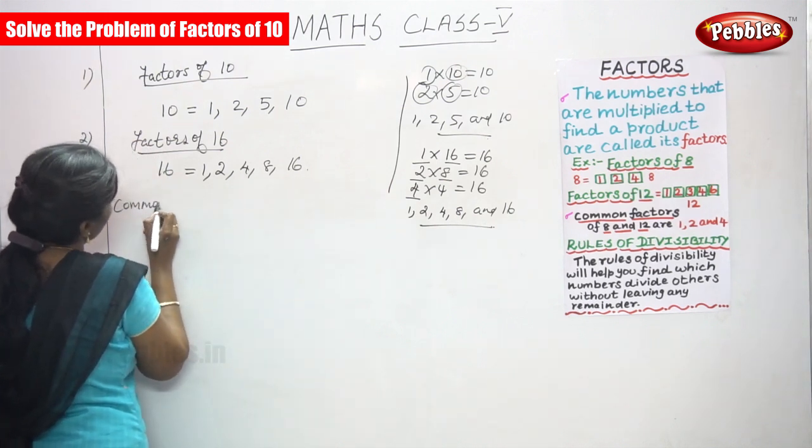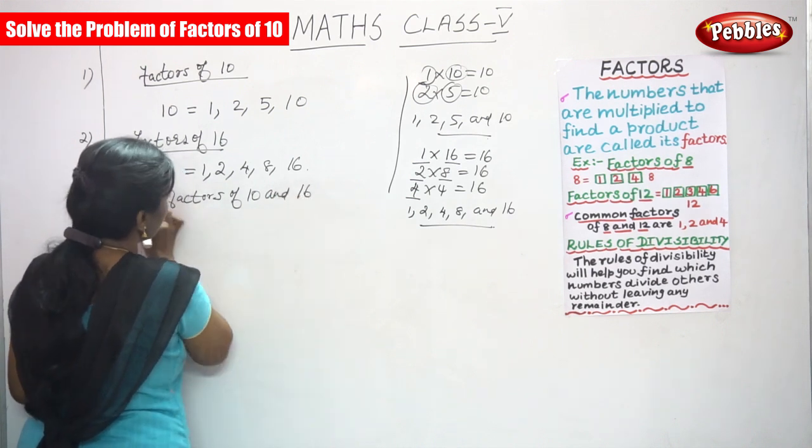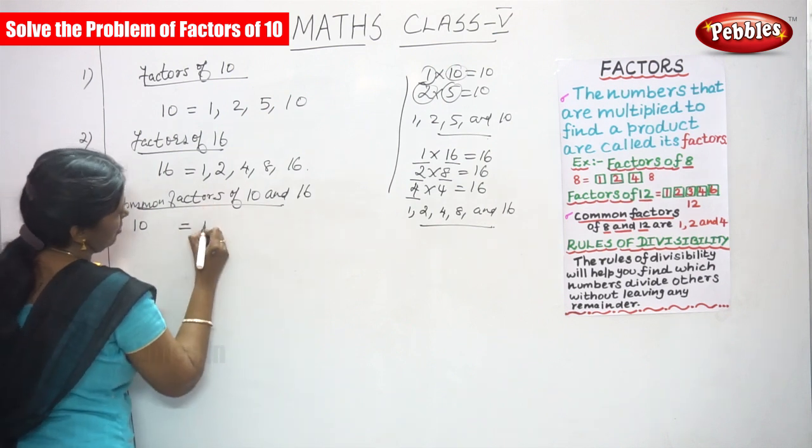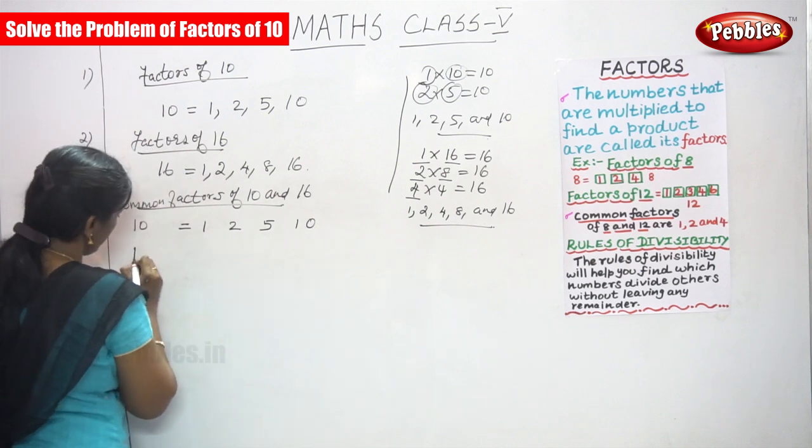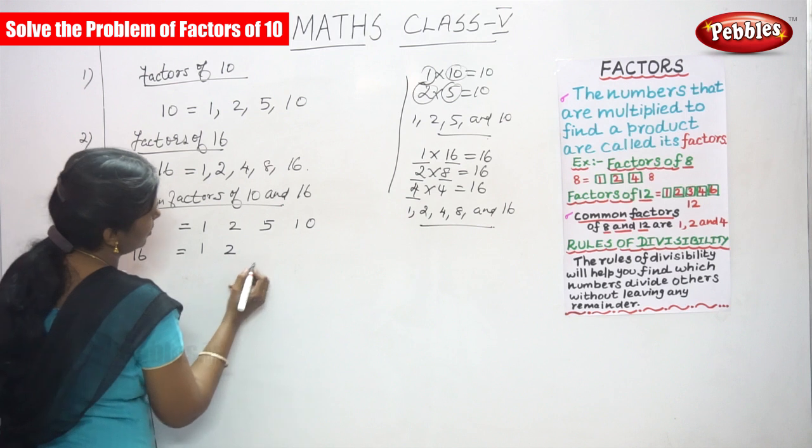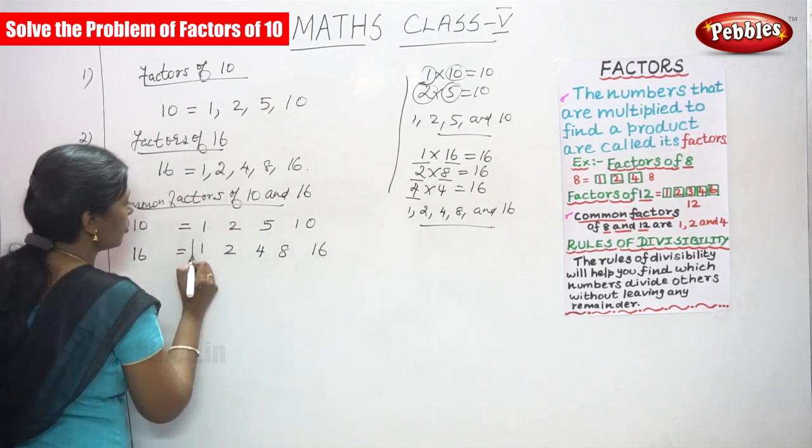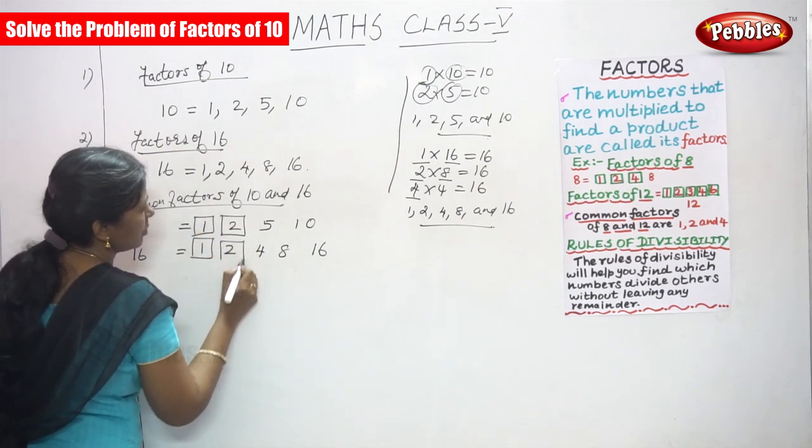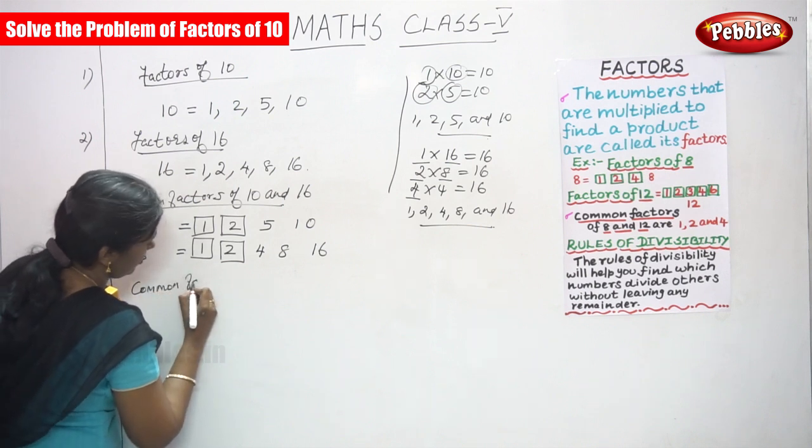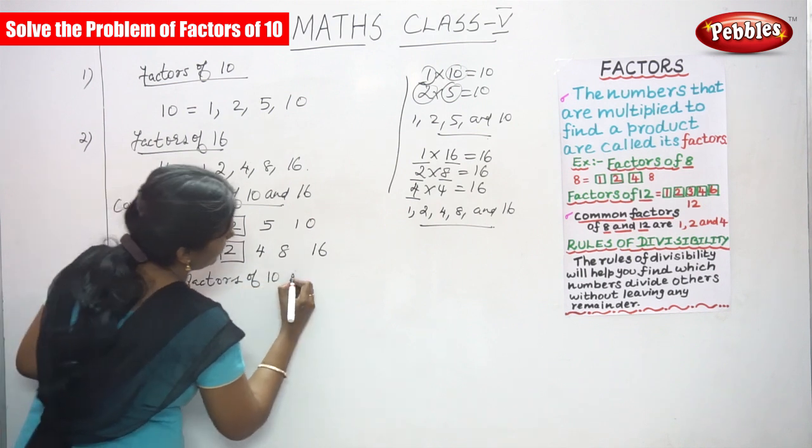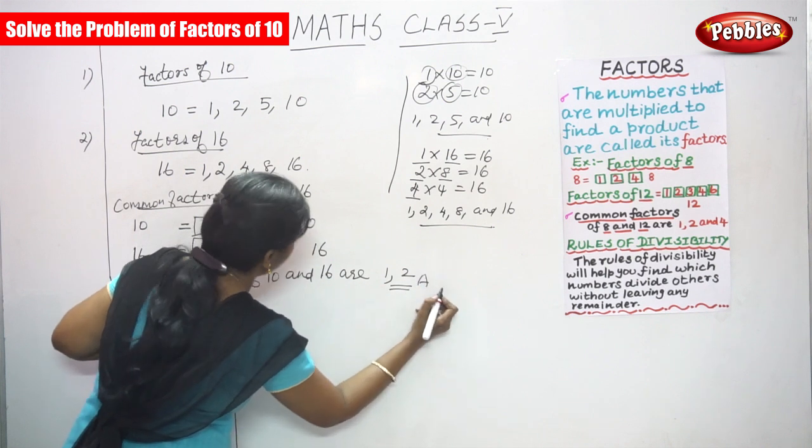Now common factors of 10 and 16. So factors of 10 are 1, 2, 5, 10 and factors of 16 are 1, 2, 4, 8, 16. So common factors of 10 and 16 are 1 and 2. This is the answer.